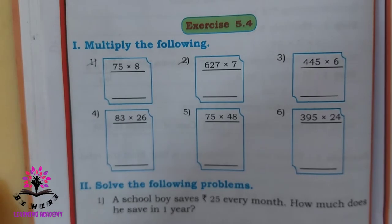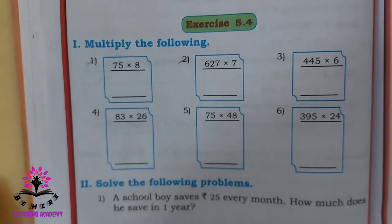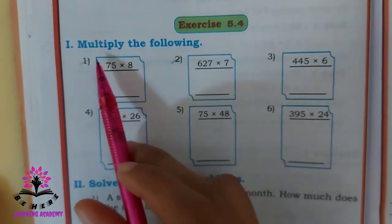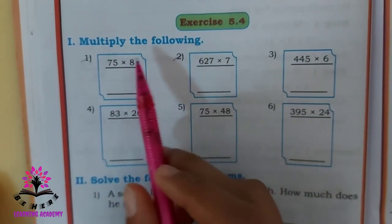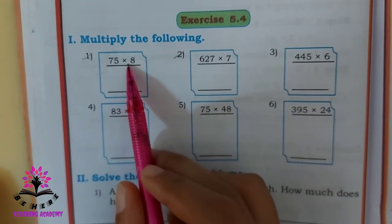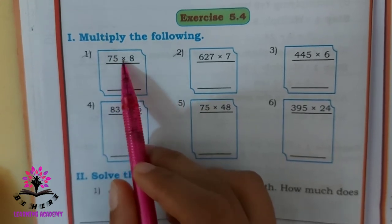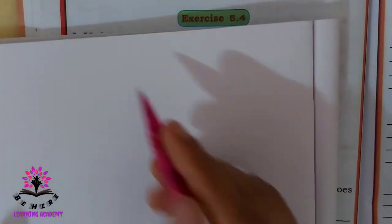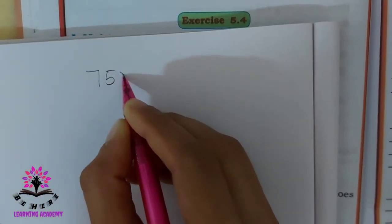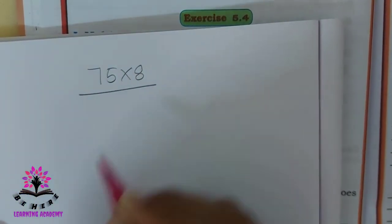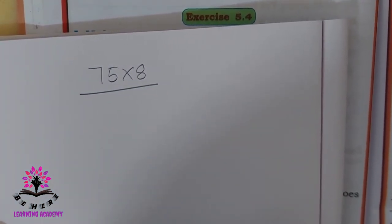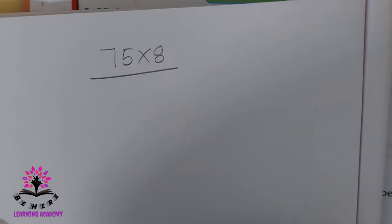Now let us move on to the next exercise in the chapter multiplication: Exercise 5.4 — multiply the following. 75 is multiplied by 8. Here we are learning multiplication with carrying. You are carrying a value — it is multiplication by carrying.